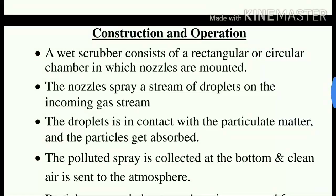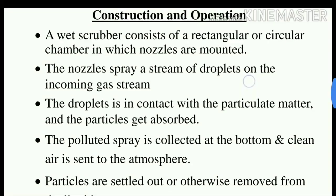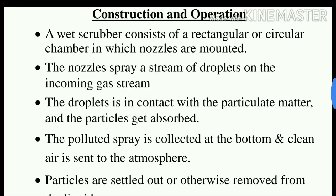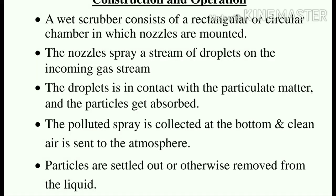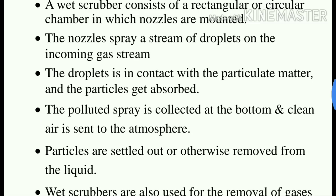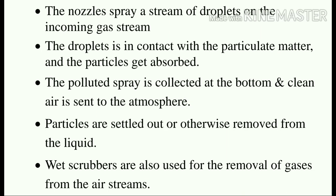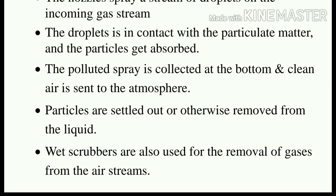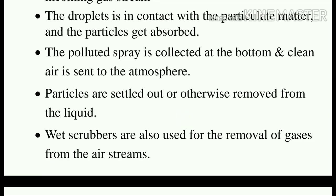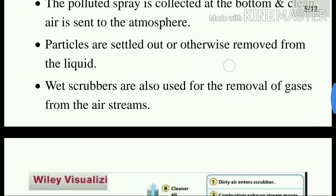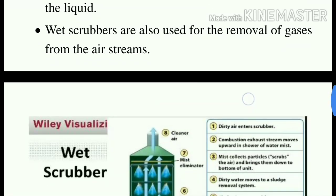For construction and operation: wet scrubbers mainly consist of a rectangular or circular chamber in which nozzles are mounted. These nozzles spray a stream of water droplets at high velocities onto the incoming gas stream. The droplets contact the particulate matter and the particles get absorbed into the water droplets. The polluted spray is collected at the bottom, clean air is sent to the atmosphere, and the settled particles are removed. The recycled liquid can also be reused as scrubbing liquid. Wet scrubbers are also used for the removal of gases from the air stream.